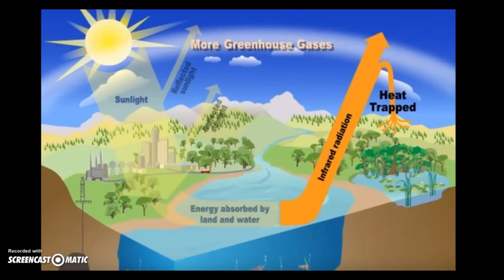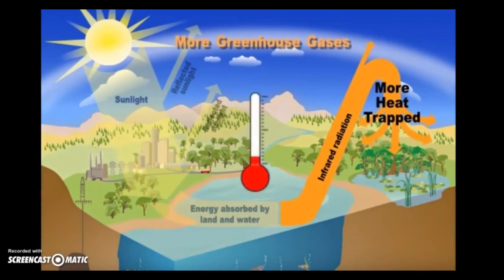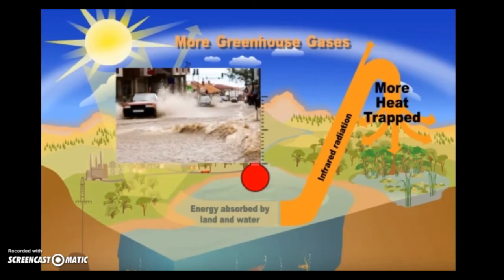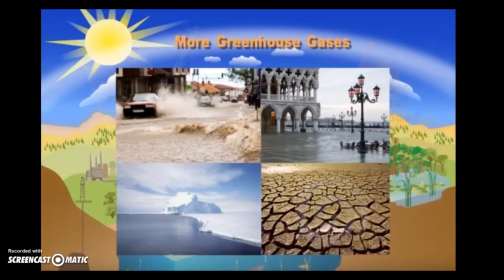How do you think extra greenhouse gases affect the amount of heat trapped in the Earth's atmosphere? You guessed it! Extra greenhouse gases trap more heat, which makes the whole planet warmer. And warmer temperatures lead to effects like changing rain and snow patterns, rising sea level, melting glaciers and ice sheets, and much more.